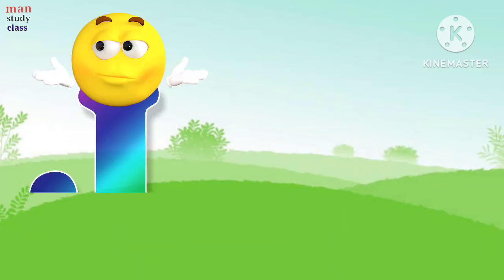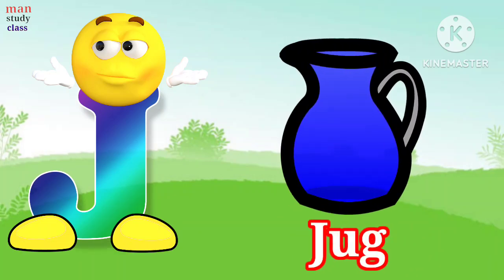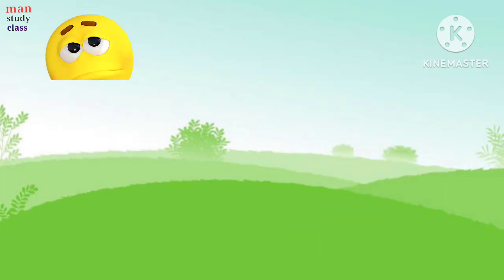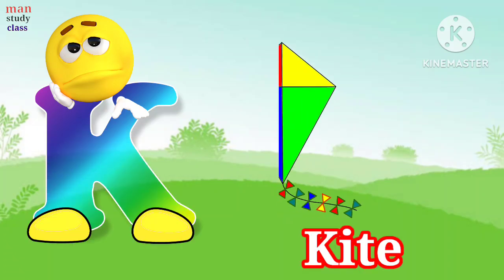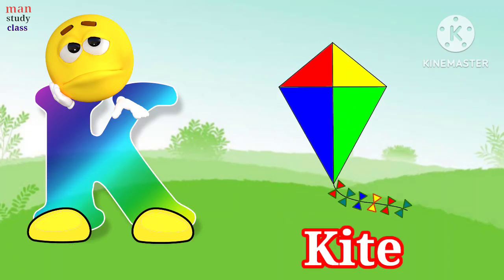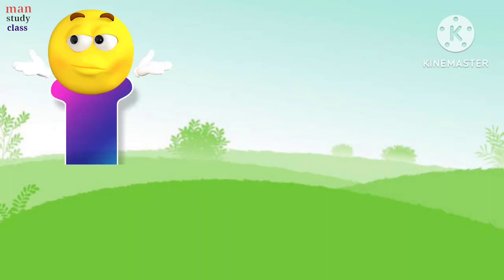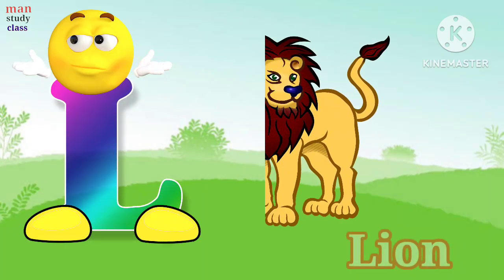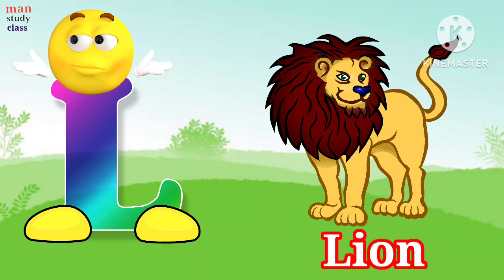J for jag, jag means jag. K for kite, kite means patan. L for lion, lion means seer.